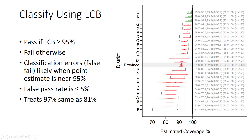But we're quite likely to have a false fail when coverage is near 95%. It may very well be true that these strata — where the point estimates are above 95% — have true coverage above 95%, but we classify them as fail. So this rule generates very few false passes, but quite a few false fails when coverage is near the threshold.